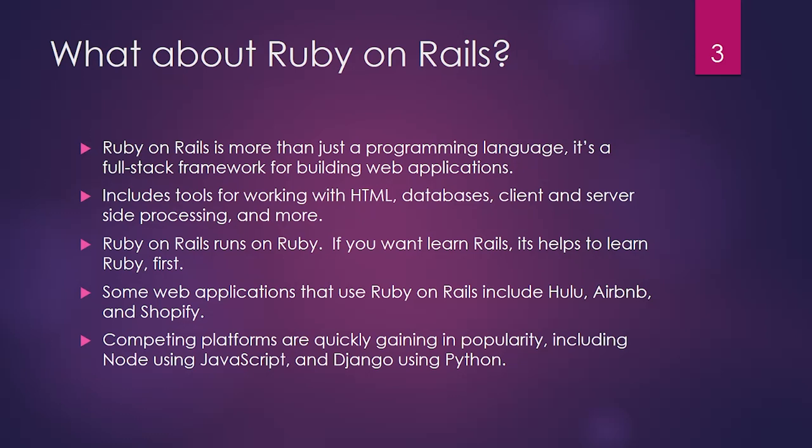You might have heard of something called Ruby on Rails, and this is probably the biggest reason people learn Ruby. Ruby on Rails is more than just a programming language — it's something called a full-stack framework, which is used for building web applications. It'll have tools for working with HTML, databases, etc., and all of that will be written in Ruby and running on Ruby. If you wanted to learn Ruby on Rails, you should probably learn Ruby first. Some applications that run on Ruby on Rails include Hulu, Airbnb, Shopify, and a whole bunch of others.